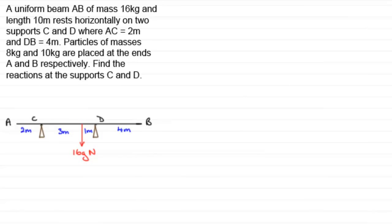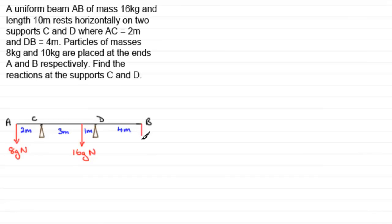We've still got some more forces to put on — the weights from the masses. We've got particles of masses 8 kilograms and 10 kilograms placed at the ends A and B respectively. So at A, the 8 kilogram mass provides a weight acting downwards of 8G Newtons. And similarly at B, there's going to be the weight of the 10 kilogram mass, that's 10G Newtons.